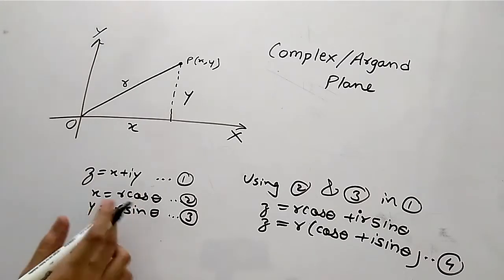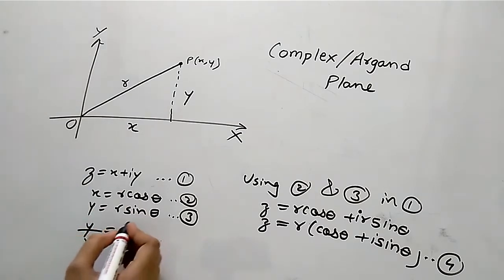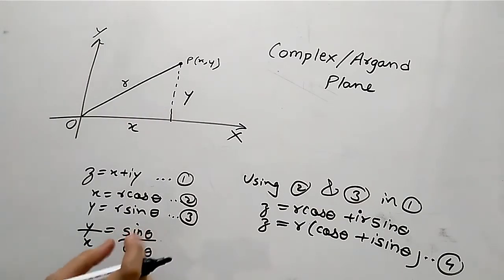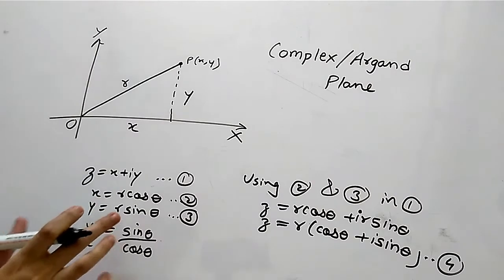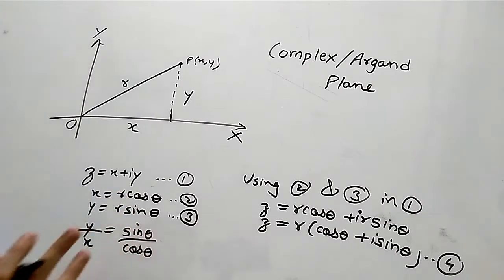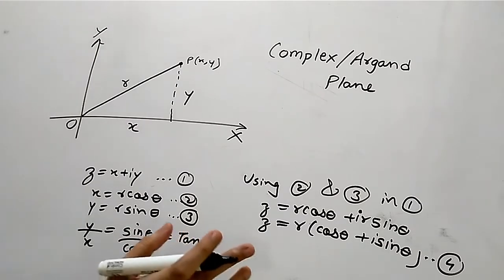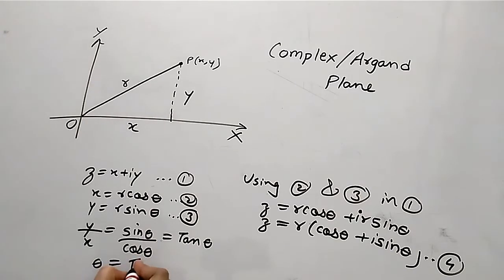Now, from equations 2 and 3, we take Y divided by X — that is equation 3 divided by equation 2. So, Y divided by X is equal to R sin theta upon R cos theta. The R's cancel, and sin divided by cos gives tan theta. Therefore, theta is equal to tan inverse of Y by X.